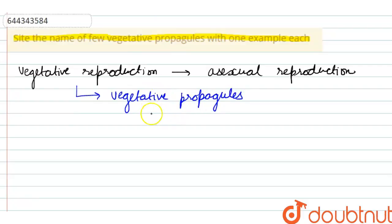If we talk about the example of vegetative propagules with example, then it will be potato and it is developing by tuber. Or we can say that the reproduction in the potato is seen by the help of the tubers.